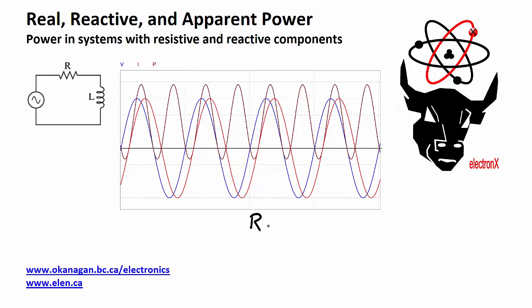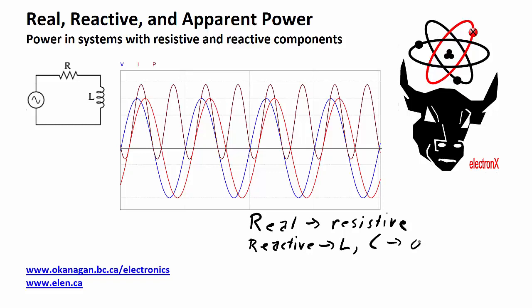There will be real power, and real power is associated with resistive elements — it's the power that actually gets dissipated in the system, so it's actually used up. Then there's reactive power, associated with the reactive components — the inductors and the capacitors — and this power just oscillates back and forth between the components and the source. The third type is apparent power, which is a combination of the real and reactive power, quantifying those two powers into one.